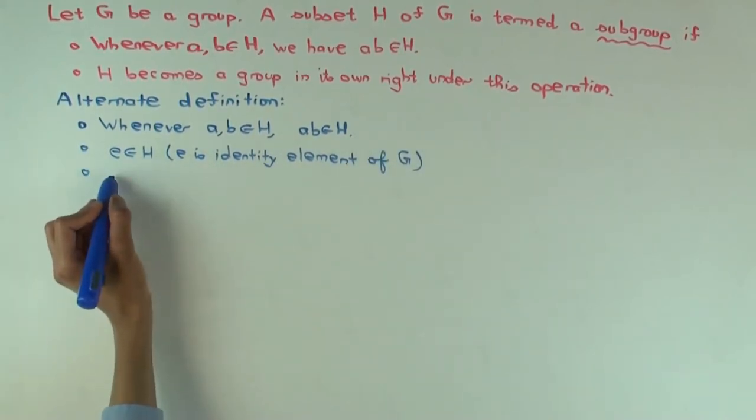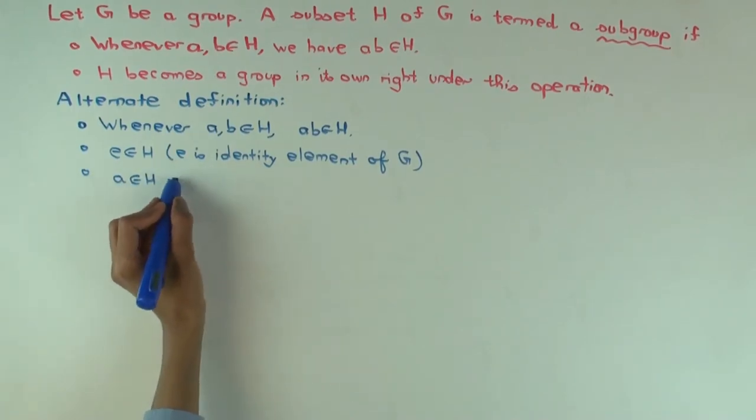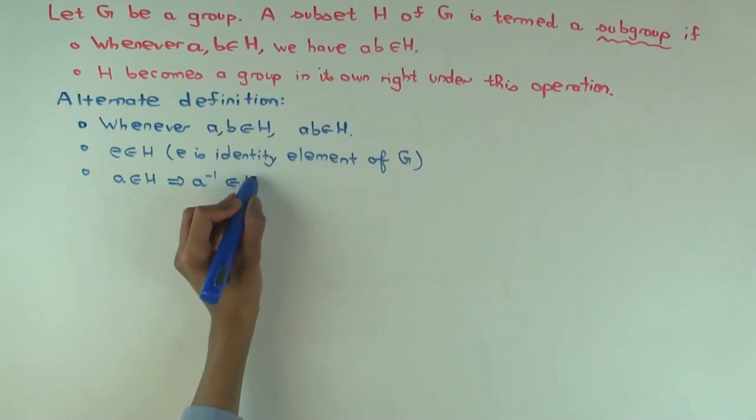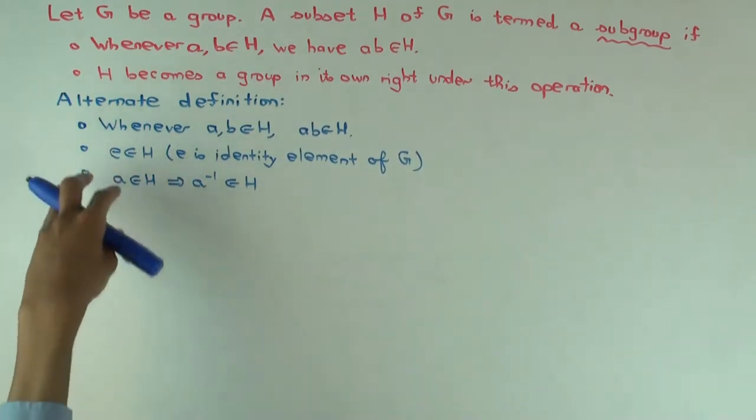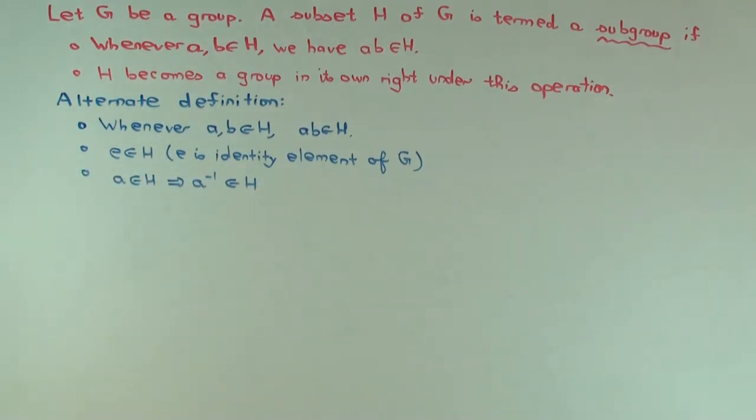And the third condition you impose is that if A is in H, then the inverse is in H. So now, can you tell me why these definitions are not obviously saying the same thing? Why do you need to show something in order to establish that the definitions are saying the same thing?